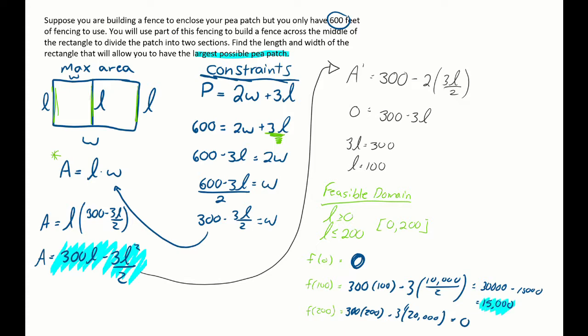The largest patch I can create is a p-patch of 15,000 square feet. And that occurs if I let the length equal 100 feet. And my width equal, well, what is the width? We can go back to our problem over here, where in this case, I have 300 minus 3 times 100 divided by 2 equals W. So I have 300 minus 150, so 150 equals W.